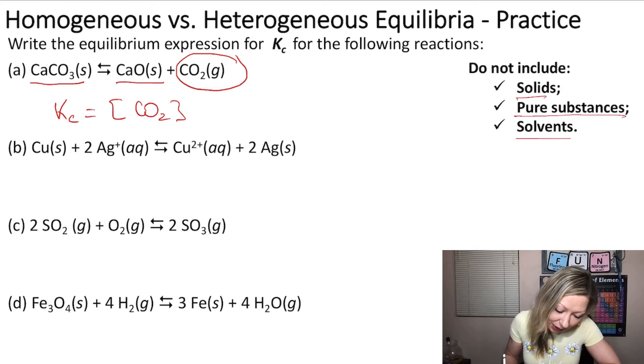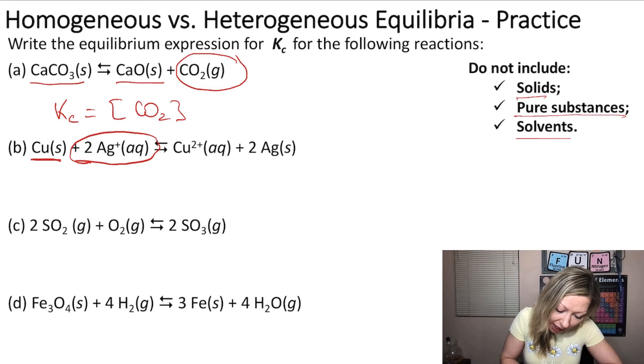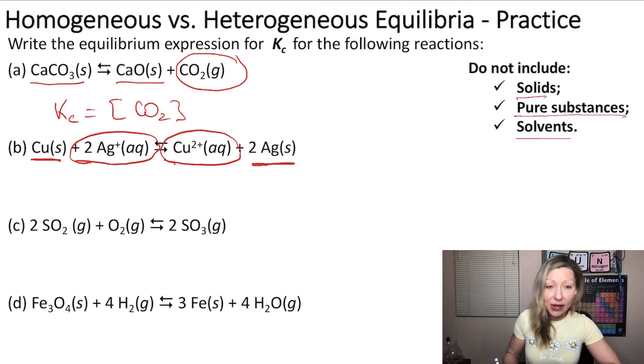What about the second reaction? Well, here we have copper, which is a solid. We have silver ions dissolved in water, which is going to be included in the equilibrium expression. Then we have copper 2 plus ions also dissolved in water, and then silver as a solid.